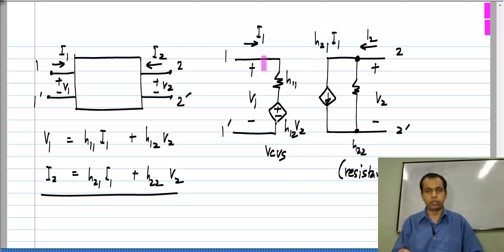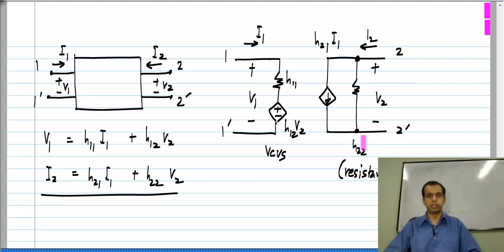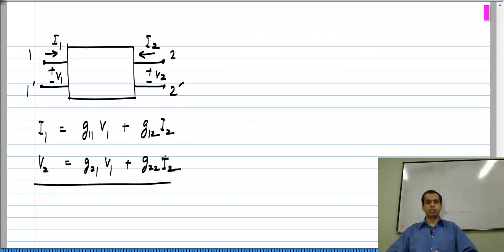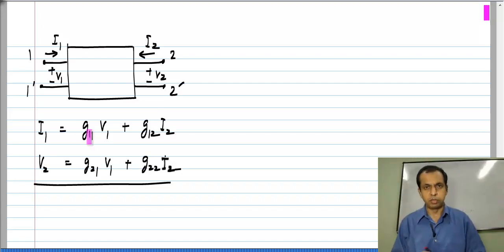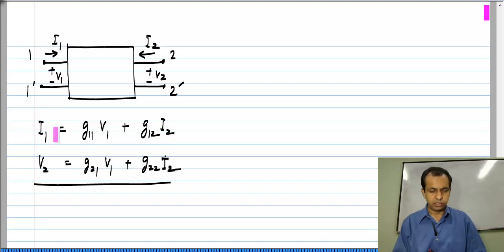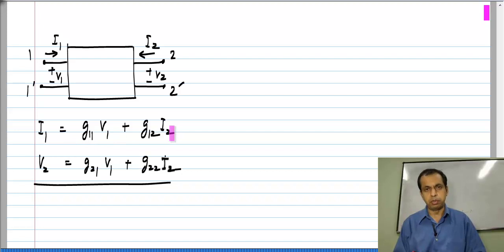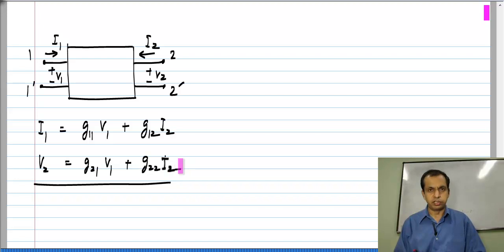So on port 1 we have series branches and on port 2 parallel branches. Finally, we look at G parameters. Again we have two equations each with a sum of two terms. The first equation results in a current which is the sum of two currents, so we need parallel branches to implement this. The second equation is a voltage which is the sum of two voltages, so we need a series combination to implement that one.